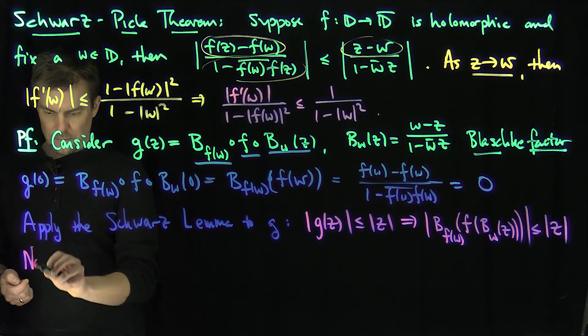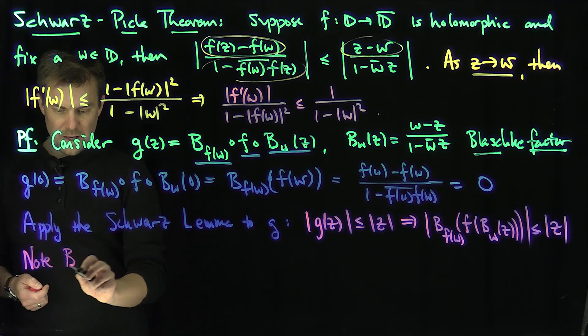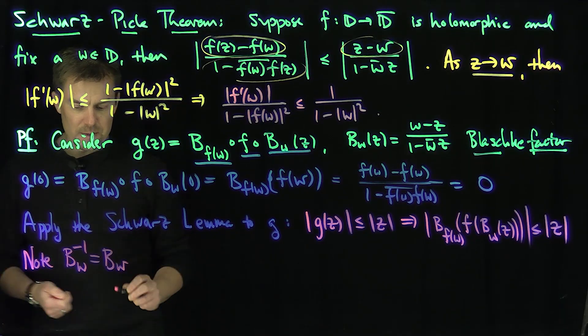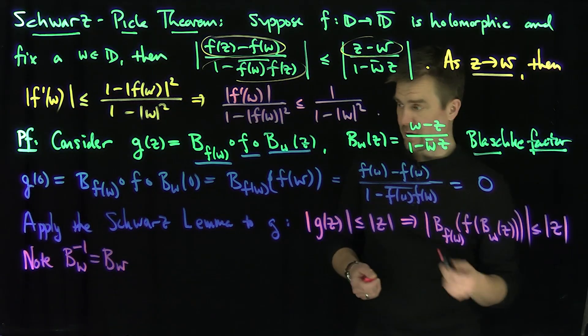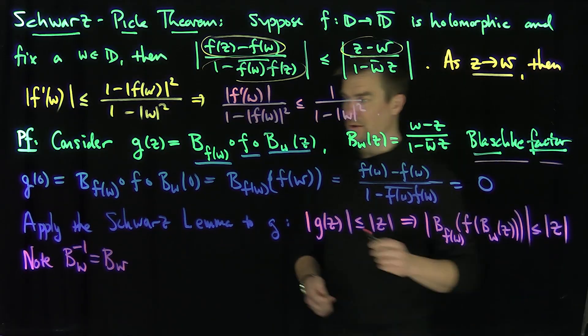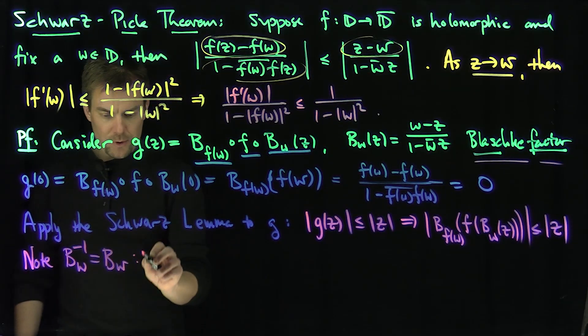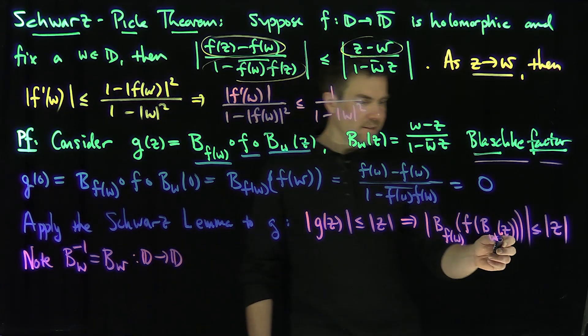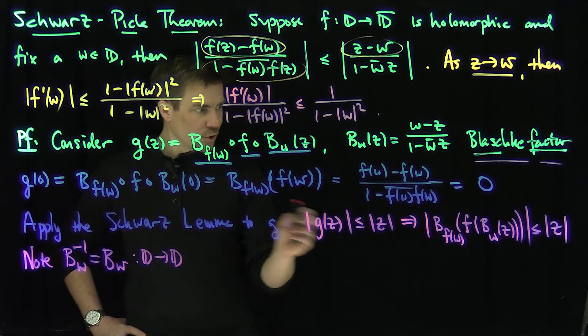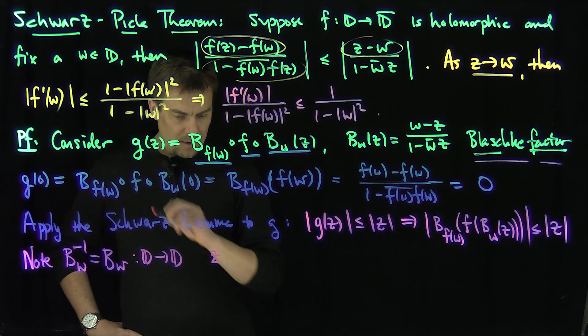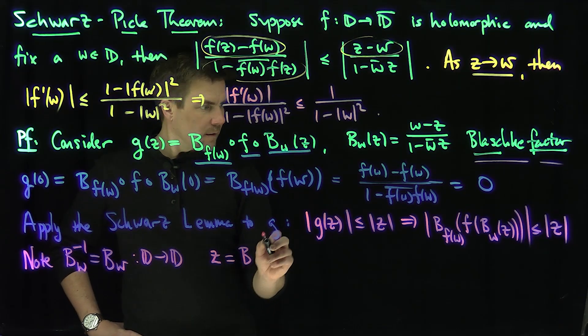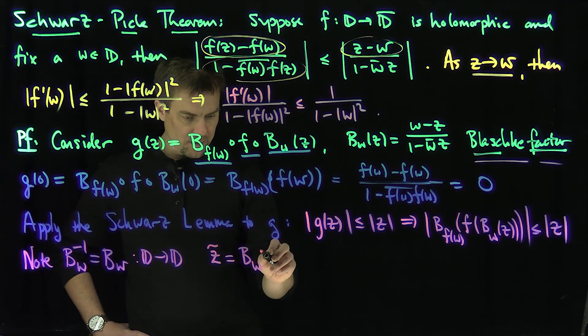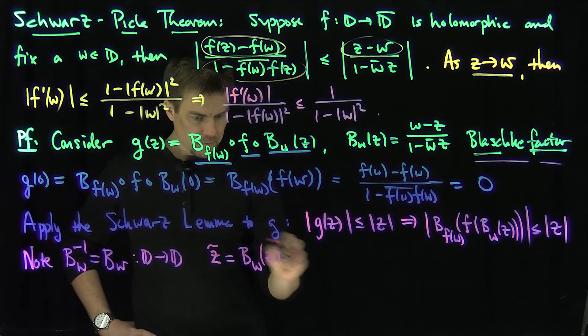Note that B_w inverse is the same thing as B_w. These Blaschke products are their own inverse. We've proven that in the video on Blaschke factors. So I can choose my z here. I can choose z to be equal to B_w inverse of z tilde.